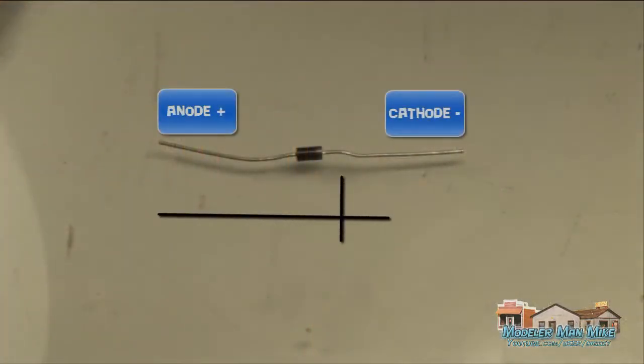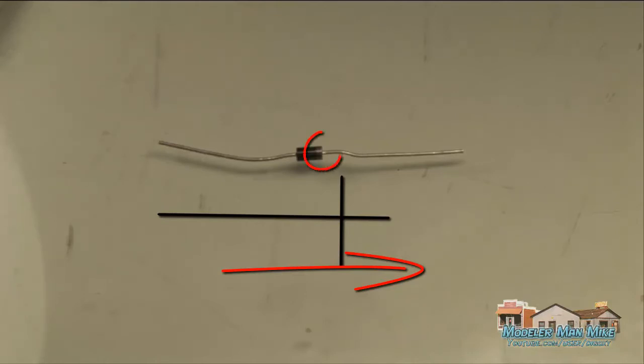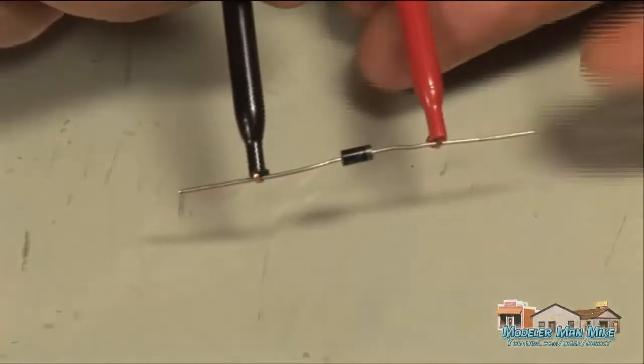Testing a diode is pretty easy. Current only flows in one direction in a diode. It's indicated by the little wall. I call it a wall. It'll flow through that only one direction and the wall side is the stopper. So where the line's at, it won't move through.